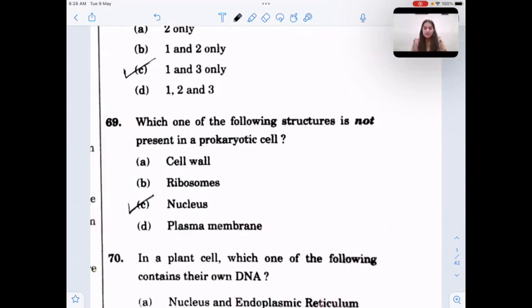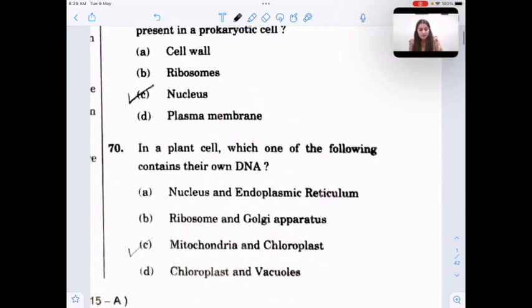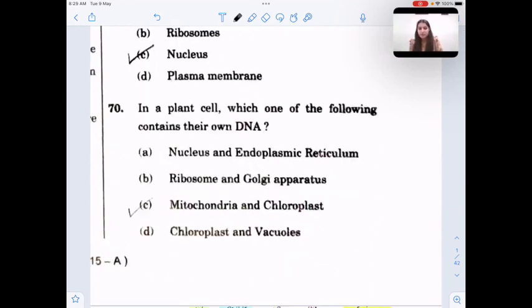Next question: which one of the following is not present in prokaryotic cell? The basic difference between prokaryotic and eukaryotic cell type is about their nuclear membrane. It's nucleus. In prokaryotes, nucleus is not fully developed.